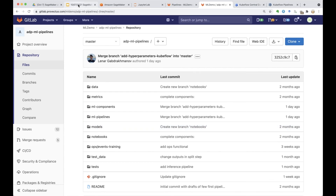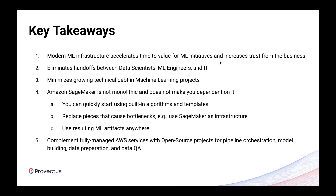Key takeaways from today's session: modern machine learning infrastructure accelerates time to value for ML initiatives and increases trust from the business. It eliminates handoffs between data scientists, machine learning engineers, and IT, and minimizes growing technical debt in ML projects. As demonstrated, Amazon SageMaker is not monolithic and does not make you dependent on it — you can quickly start using built-in algorithms and templates, then replace pieces that cause bottlenecks. You can use SageMaker just as infrastructure, and you're free to use resulting ML artifacts anywhere. You can complement fully managed AWS services with open source projects for pipeline orchestration, model building, data preparation, and data quality assurance.